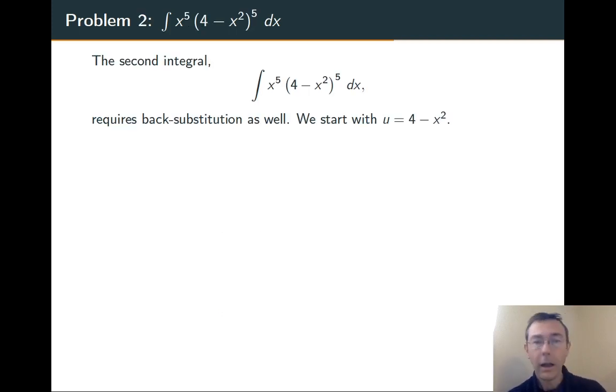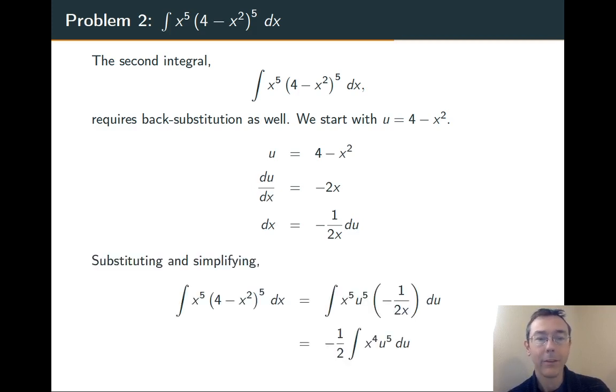Problem 2. Again, there's a very clear inside function here, 4 minus x squared. Let's let that be our u. Once we've picked that u, the next couple steps are standard. We differentiate, we solve for dx, and then we plug back into the original integral.